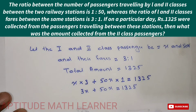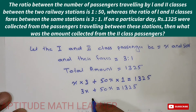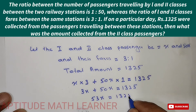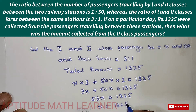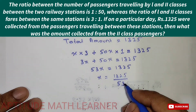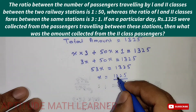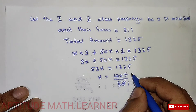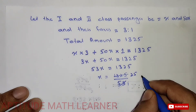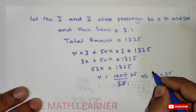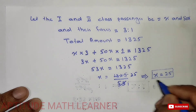This simplifies to 53x = 1325. Solving for x, we get x = 1325 ÷ 53 = 25. So the value of x is 25.